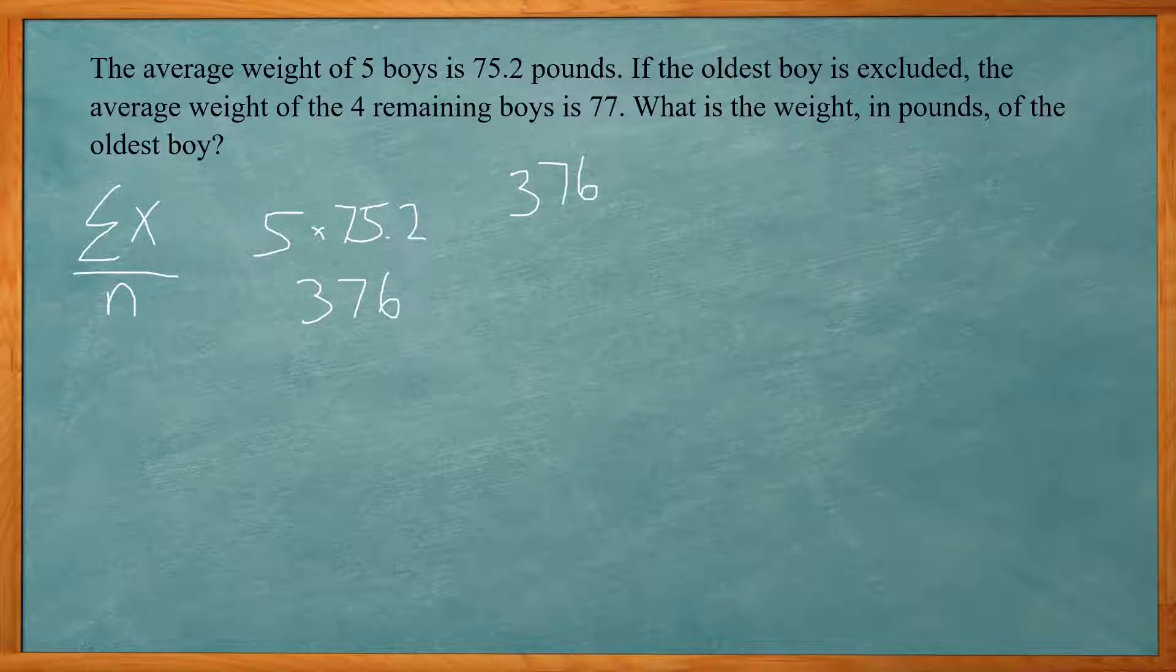the total, the new total will be that minus the weight of the older boy. And now we only have four to divide by, because there's only four values and that average came out to 77. So we set up an equation here. 376 minus x divided by four equals 77. Now we can solve for x. So I can multiply both sides by four.